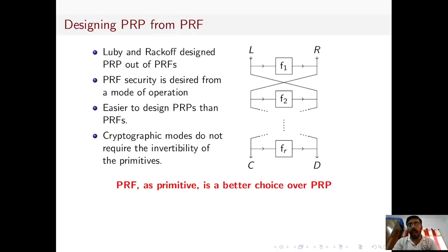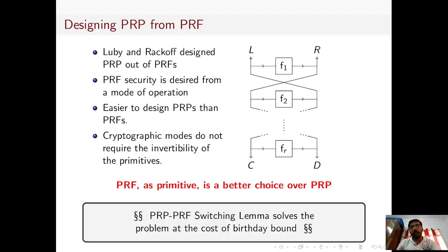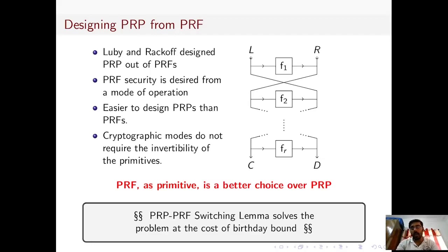In fact, if we instantiate the counter mode of encryption with a PRF instead of a PRP, it will give optimal security. Nevertheless, due to the PRP-PRF switching lemma, one can argue that the block cipher itself is a good PRF, and hence one can consider a block cipher as a PRF in block-cipher-based modes of operation. But this comes at the cost of birthday-bound security, which may not be adequate when the block size of the underlying block cipher is small — e.g., a 64-bit block cipher.